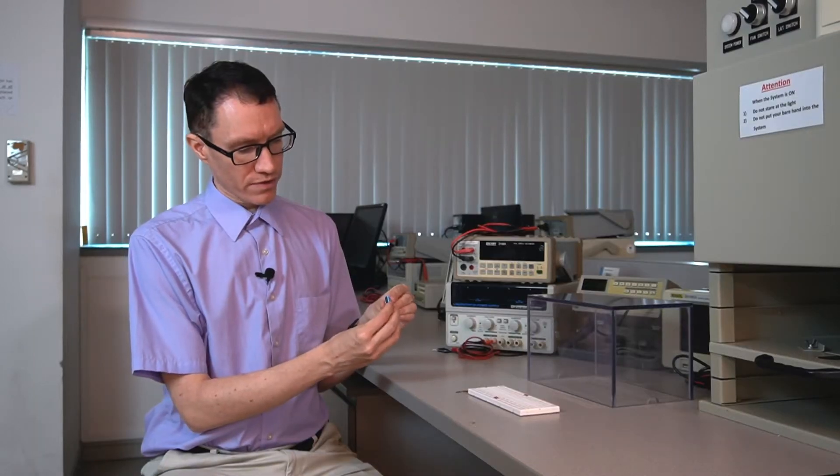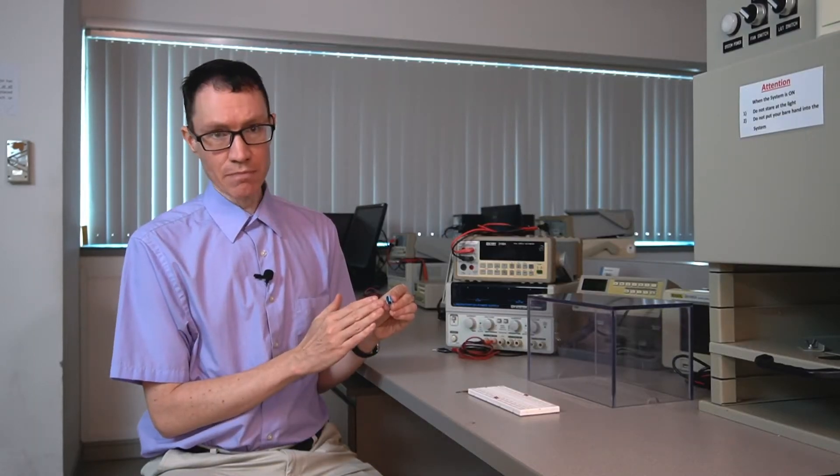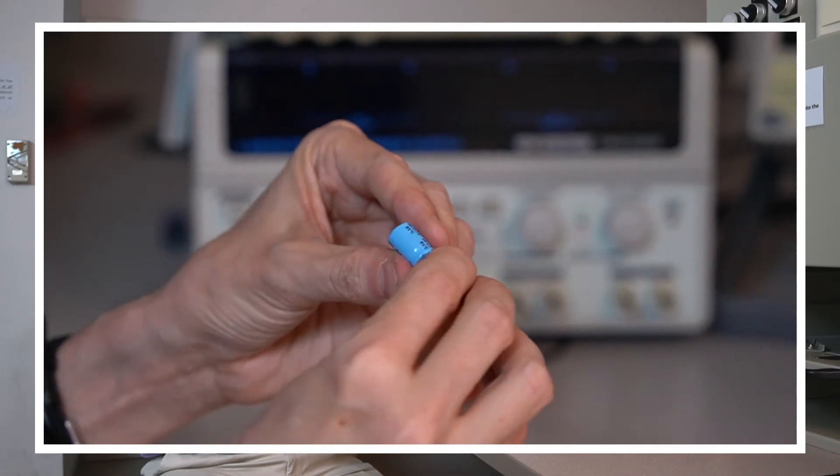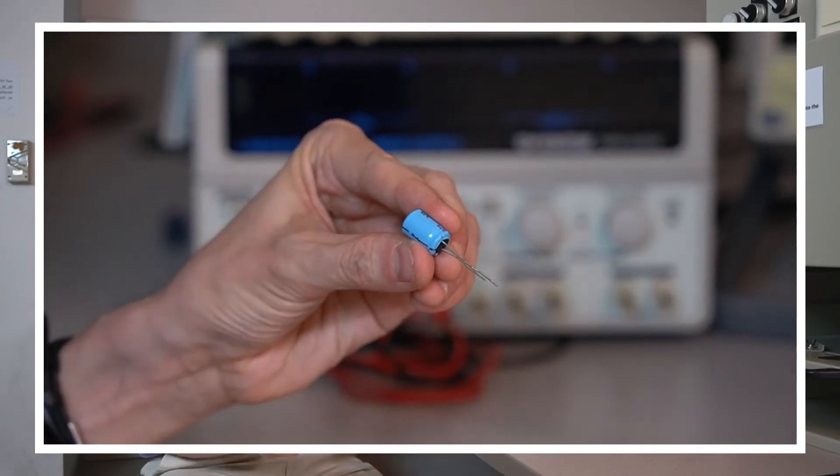One other important thing about these capacitors is that polarity is important. You might notice there's a row of minus signs along one side of the capacitor. The other side doesn't have any symbols at all,